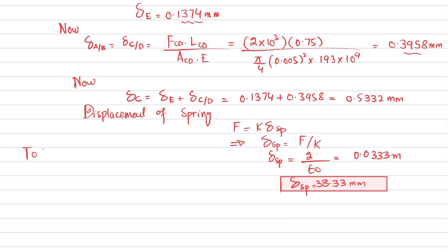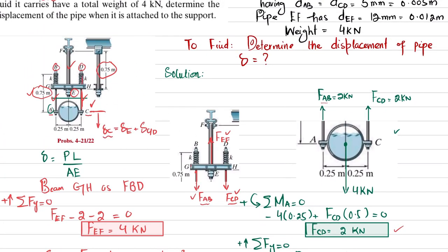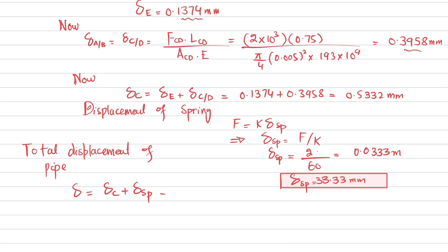The total displacement of the pipe equals δ_C plus δ_spring, because point C displaces and the spring also stretches downward. So total displacement = 0.5332 + 33.333 = 33.9 millimeter.